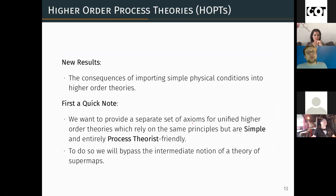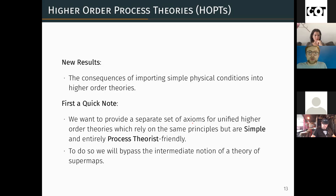So what's new? The main thing we wanted to do in this paper was, now that we've got this place to start, explore the consequences of adding some basic physical conditions and see if we can emulate some of the features of higher order causal categories from core principles. We also wanted to provide a very simple set of axioms for these higher order process theories, which essentially rely on the same principles we've already stated but are easier to state — we don't end up using any categorical language, and hopefully they are simpler to follow. We can do this if we choose to bypass the intermediate notion of the theory of supermaps and just talk about a unified theory from the start.